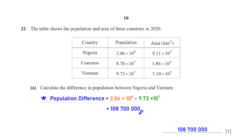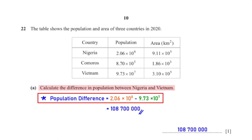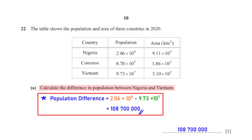The table shows the population and area of three countries in 2020. Calculate the difference in population between Nigeria and Vietnam. The population difference is 2.06 × 10⁸ minus 9.73 × 10⁷. When we type this into the calculator, we get 108,700,000 (108 million seven hundred thousand).